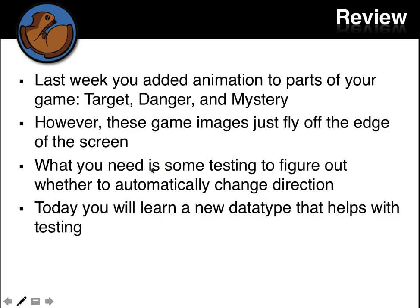Last week you added animation to parts of your game: Target, Danger, and Mystery. However, these game images just fly off the edge of the screen. What you need is some testing to figure out whether to automatically change direction. Today we'll learn about a new data type that helps with this kind of testing.